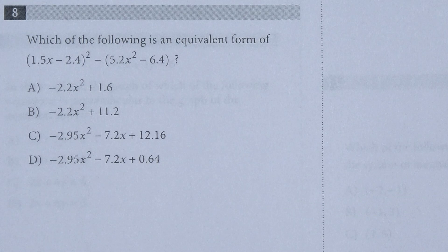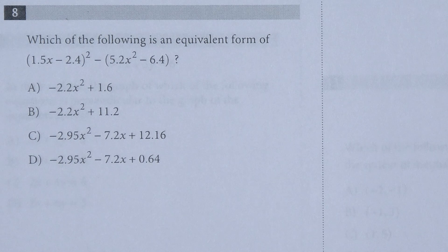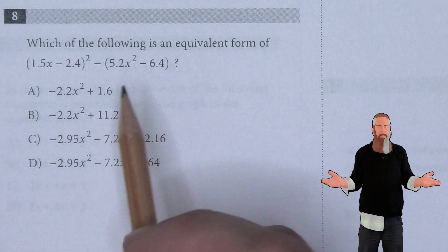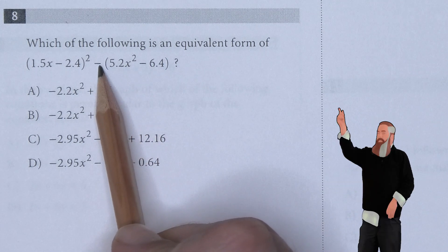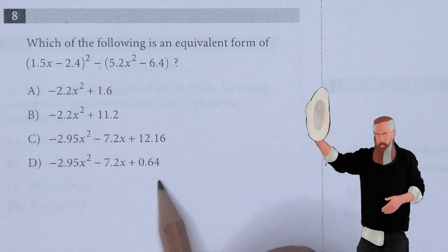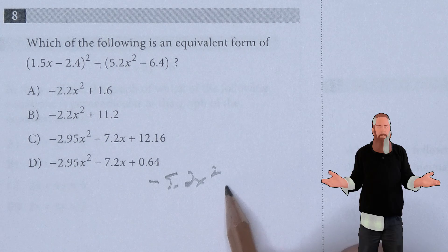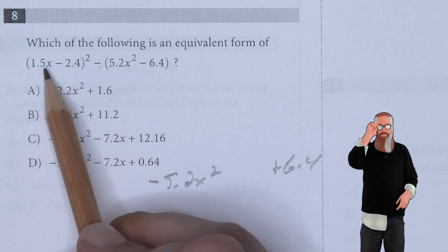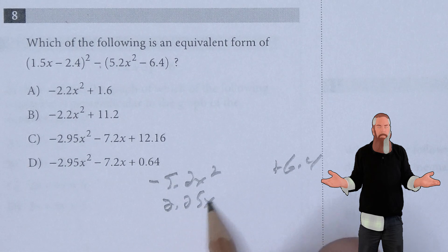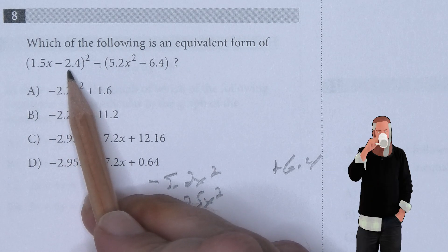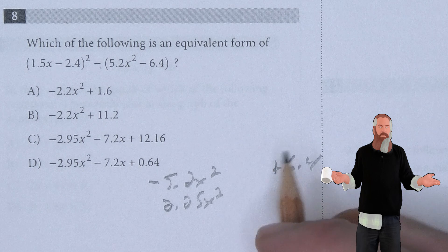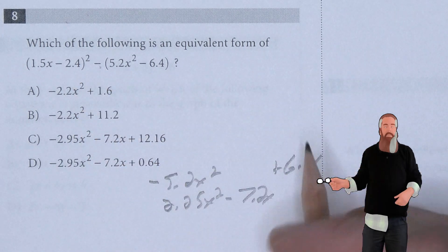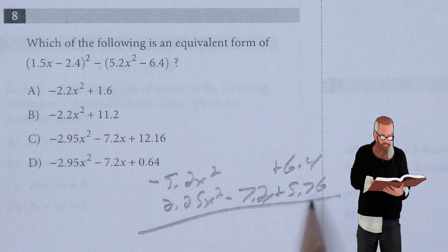Which of the following is an equivalent form of (1.5X - 2.4)² - (2.5X² + 6.4)? First, get rid of these parentheses. The negative into the parentheses gives us -5.2X² and +6.4. Now we need to multiply this out: 1.5X times 1.5X is 2.25X². 1.5X times -2.4, but we do this twice, so times 2 gives us -7.2X. And -2.4 times -2.4 is +5.76.